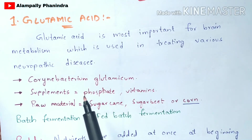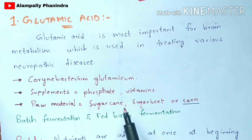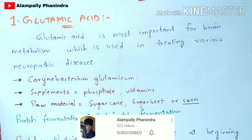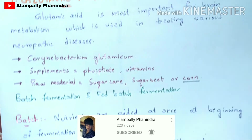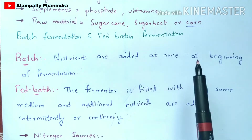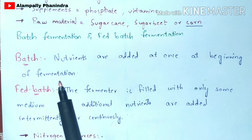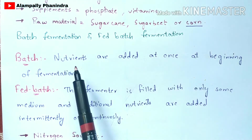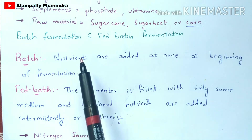Glutamic acid can be produced by fermentation through two processes: batch fermentation and fed-batch fermentation. In batch fermentation, the nutrients are added all at once at the beginning of the fermentation — you do not add nutrients during the process or at the end of fermentation.